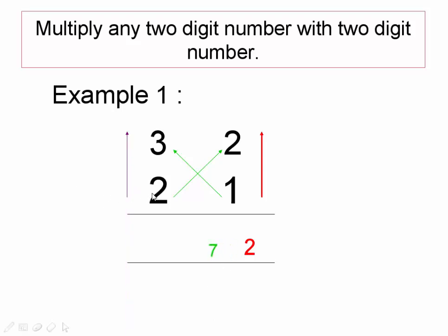So the output you will be getting is 6. The final output of 32 into 21 is 672. It's very simple. All you need to do is a lot of practice.